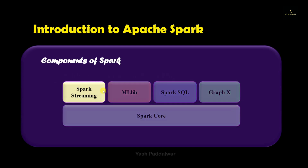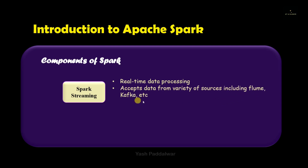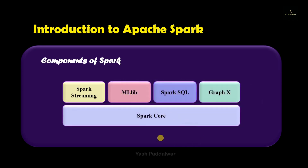The next component is Spark Streaming. Spark supports real-time data processing with the help of this component. A quick question: comment down whether Hadoop supports real-time data processing or not. Spark Streaming accepts data from a variety of sources, including Flume, Kafka, and many more. Note that Spark Streaming uses the technique of micro-batching to process real-time streaming data, which means it groups the streaming data into batches and then processes the data inside each batch individually.